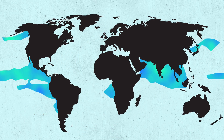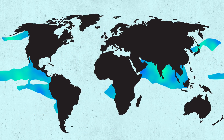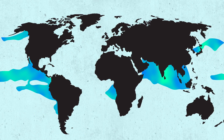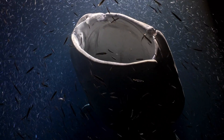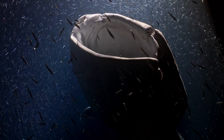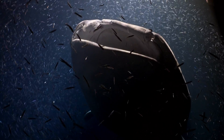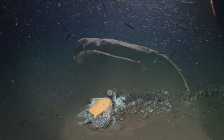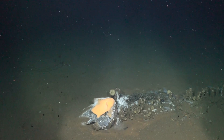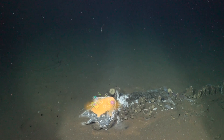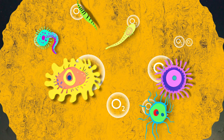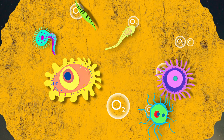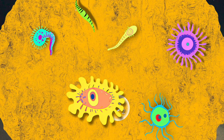Oxygen minimum zones form in areas where mixing is naturally low, and where nutrient-rich waters support a large amount of plankton. Plankton support marine life, but as all organisms die and sink, microbes consume them, using up oxygen in the process and causing an overall decrease in oxygen levels.